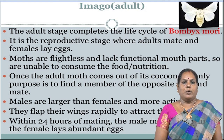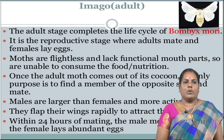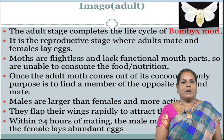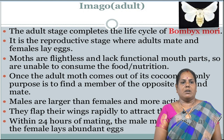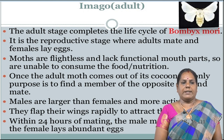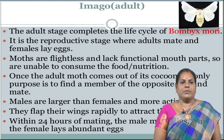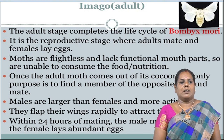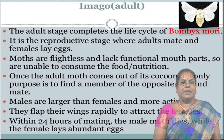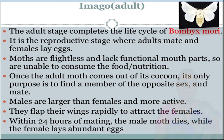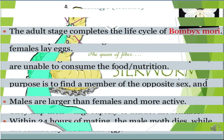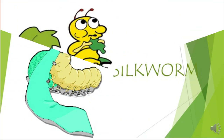Once the adult moth comes out of its cocoon, its only purpose is to find a member of the opposite sex and mate. Males are larger than females and more active. They flap their wings rapidly to attract females. Within 24 hours of mating, the male moth dies, while the female lays abundant eggs. This is the imago, the final stage. Thank you.